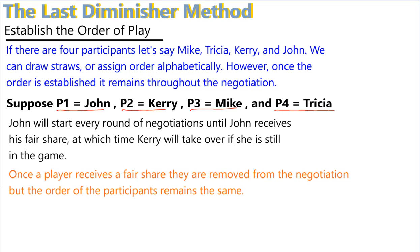John will start every single round of negotiations until John receives his fair share, at which time Kerry will take over if she's still in the game. Once a player receives a fair share, they are removed from the negotiations. But the order of the remaining participants stays the same.